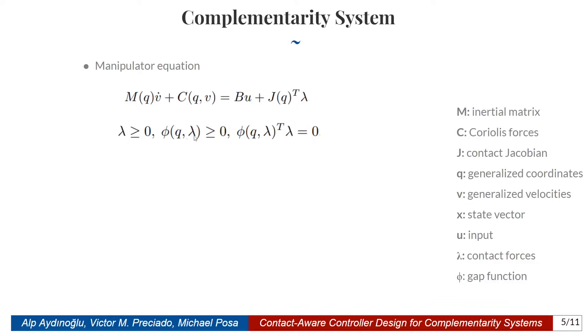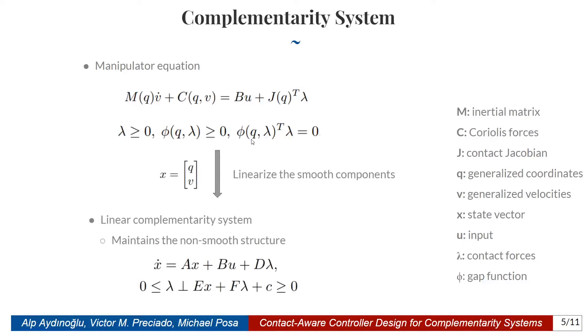Here, lambda is the contact force, phi is the gap function, which tells us the distance between the robot and the contact surface. As you can observe from this third constraint, either the contact force is 0, or the distance between the robot and its environment is 0. After doing this, we linearize the smooth components of the dynamics, so we are linearizing M, C, J, and phi, in order to obtain a linear complementarity system model. One important thing to notice is that we are maintaining the non-smooth structure of the dynamics, so this is a non-smooth approximation, it's not an exact linearization.